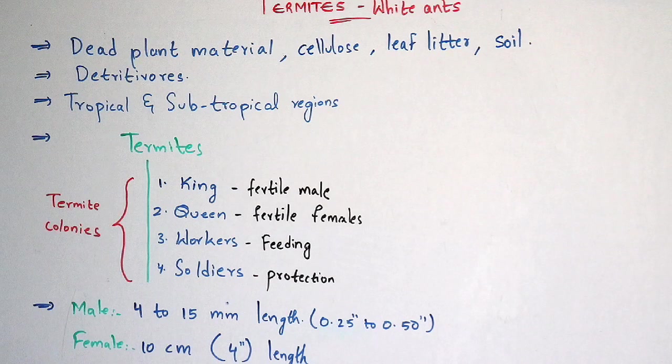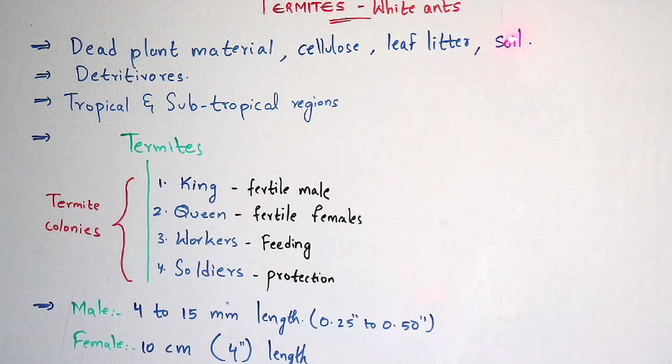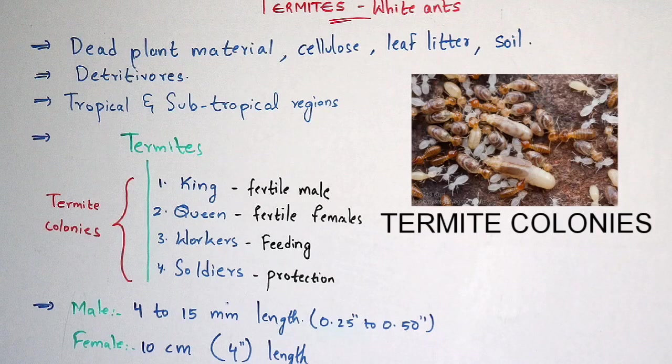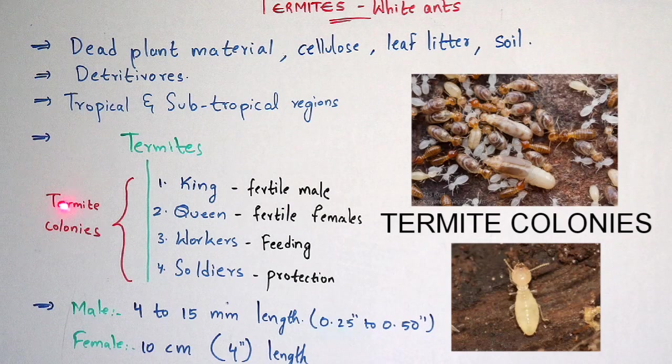Termites also feed upon dead animal specimens and dead decaying material of humans which are present in the soil. These termites can be seen in tropical and subtropical regions, and they live in termite colonies. For example, just like honeybees have queen bee, worker bees and soldier bees living in bee colonies, termites are present in termite colonies.